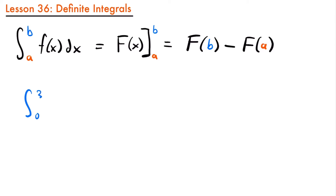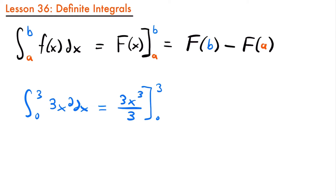For example, if we have the integral from 0 to 3 of 3x squared dx, we can solve this by first finding the antiderivative of 3x squared. Using the power rule for integration, that is equal to 3x to the third power divided by 3, evaluated from 0 to 3. We added 1 to our exponent to get x to the third power, then divided by that new exponent. We can simplify by canceling the 3s, giving us x cubed evaluated from 0 to 3.